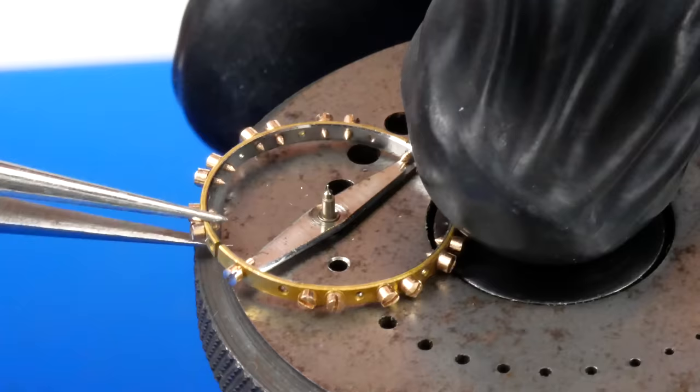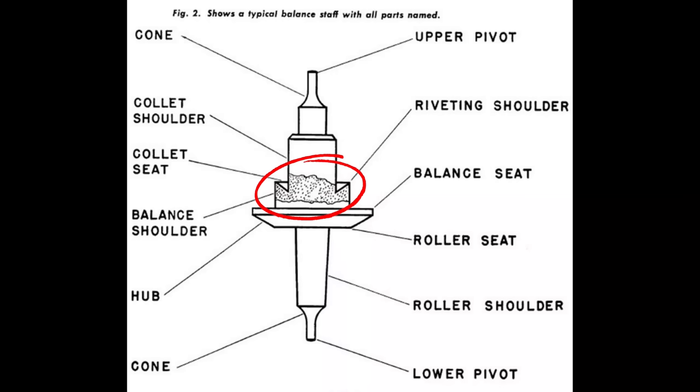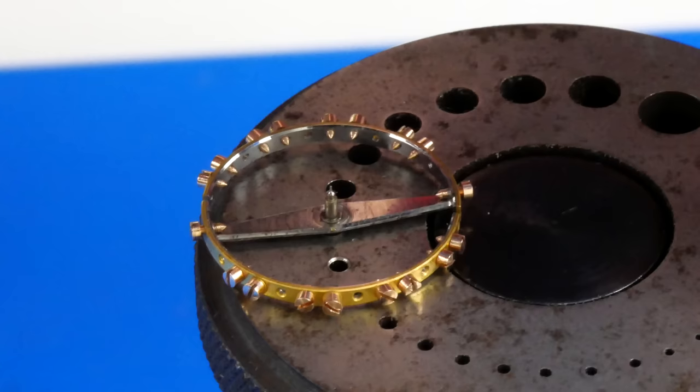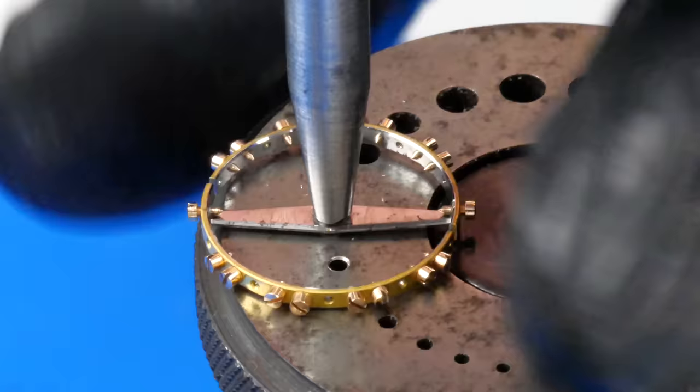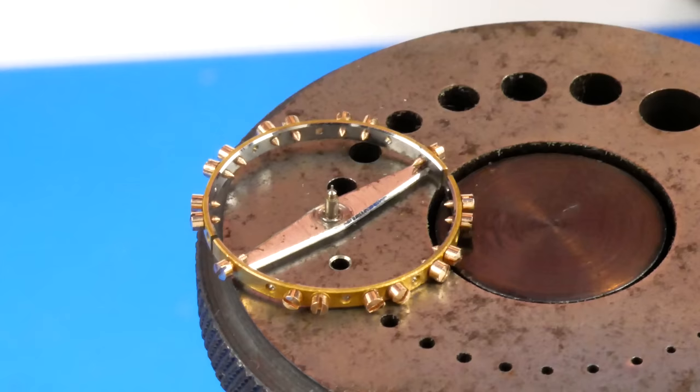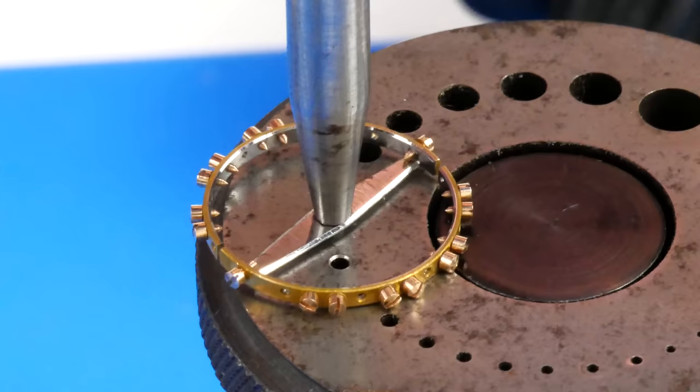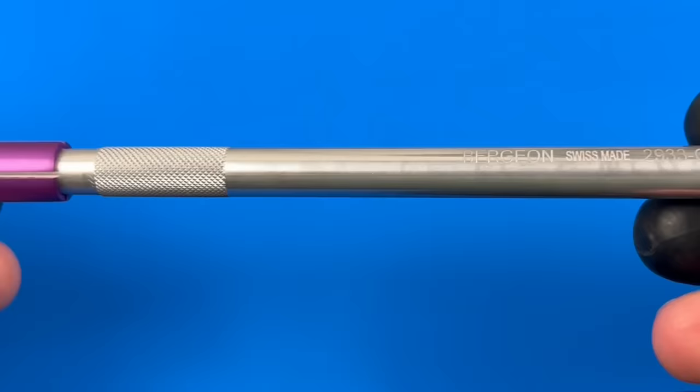The new staff is placed in the staking anvil and I lower the balance wheel over top to prepare it for riveting. I will now use a round faced punch to expand the riveting shoulder of the staff. When I'm satisfied with the strength of the rivet, I will finish it off by flattening any remaining lip with a flat faced punch so that the hairspring collet sits as flush to the balance as possible.